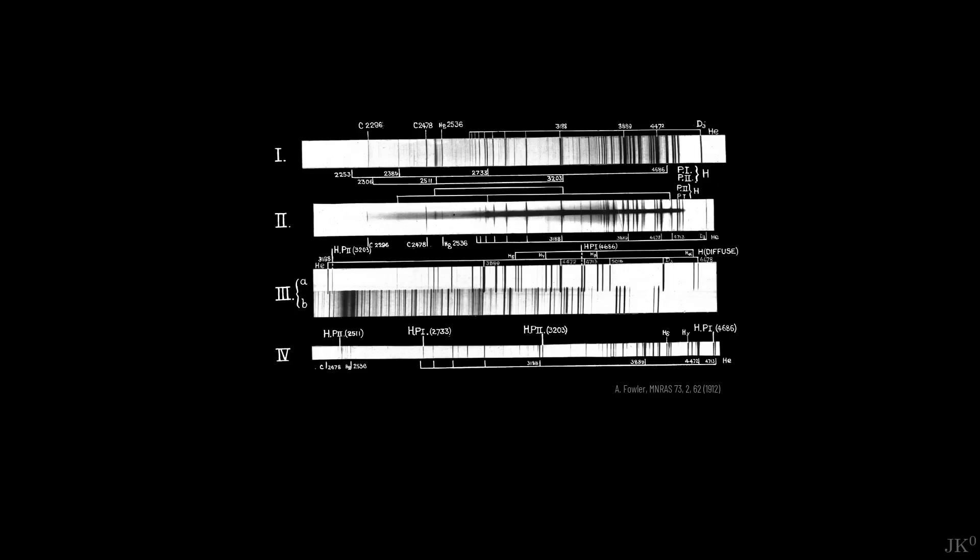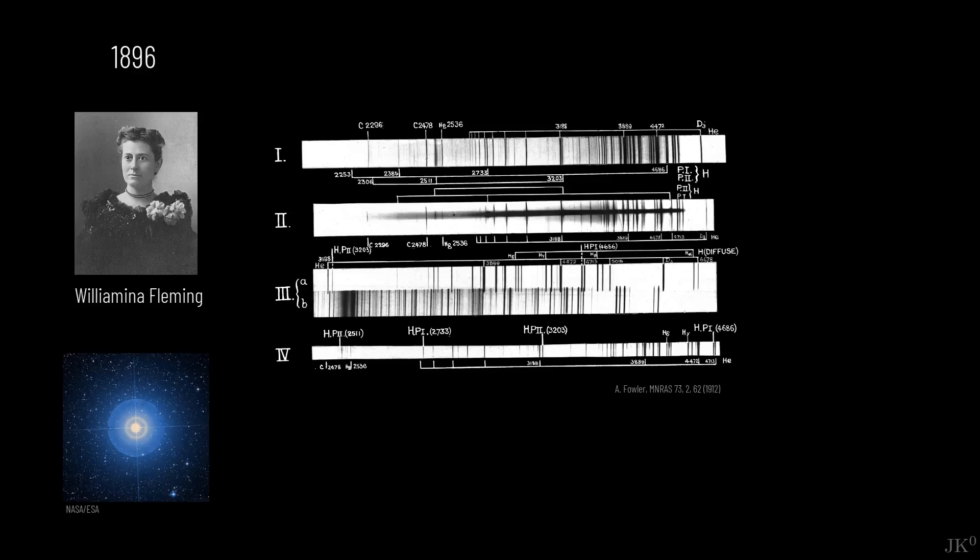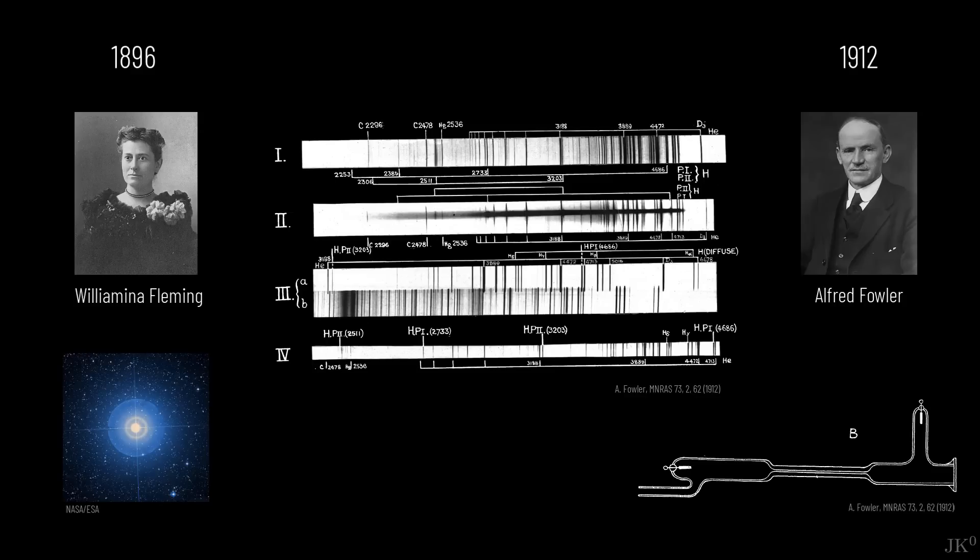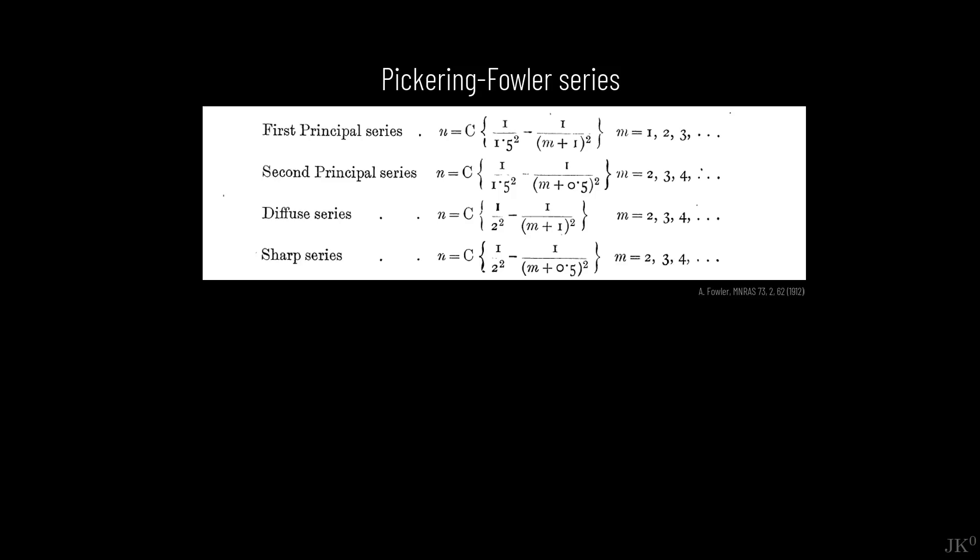One immediate challenge for Bohr's model was the anomalous hydrogen lines, discovered in 1896 by Fleming and in 1912 by Fowler. The main issue with these new lines was the presence of the half-integer index. Let me remind you that the integer indices n1 and n2 in Bohr's formula, denoting the final and initial state of the electron in the atomic transition, arise from his quantum rule that the electron's angular momentum can only take integer multiple values of Planck's constant.